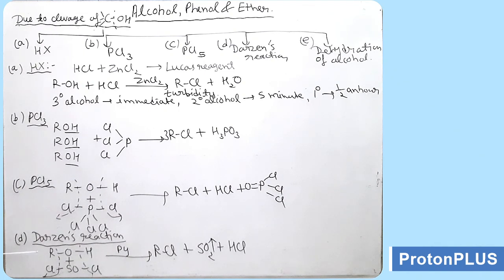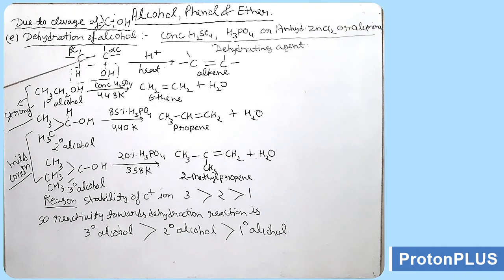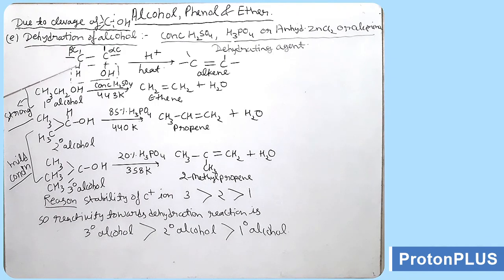Next, dehydration of alcohol. For dehydration we use dehydrating agents: concentrated H2SO4, phosphoric acid H3PO4, anhydrous ZnCl2, or alumina. In dehydration, the carbon bearing the OH group is the alpha carbon, and the adjacent carbon is the beta carbon. The OH group moves from the alpha carbon and hydrogen is eliminated from the beta carbon — it is a beta elimination reaction. Two sigma bonds break and one new pi bond forms, giving an alkene as product.